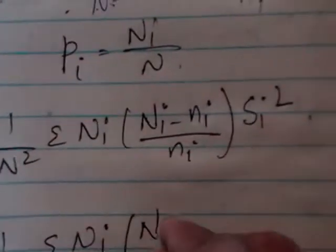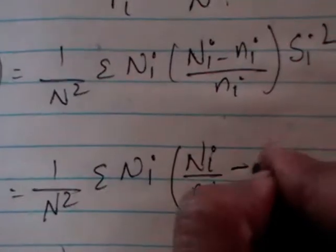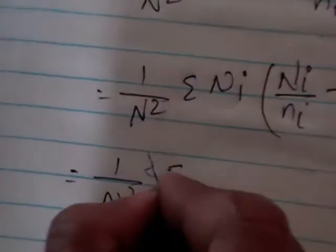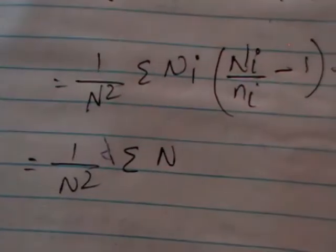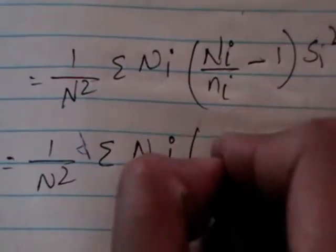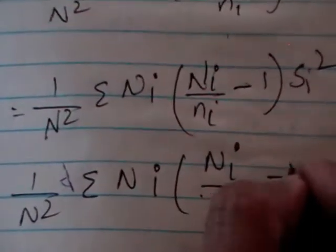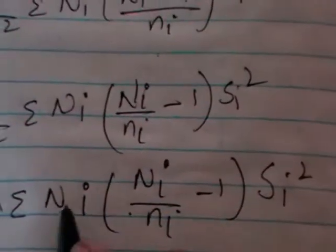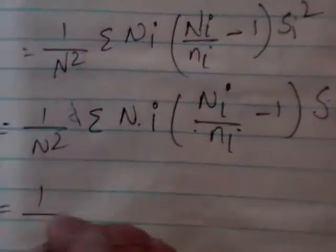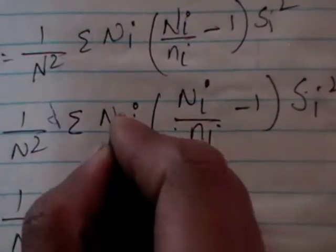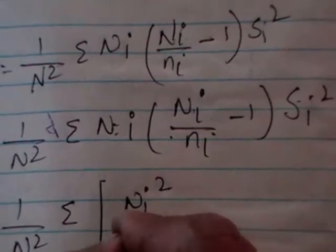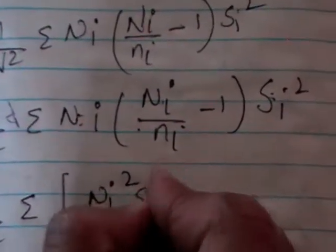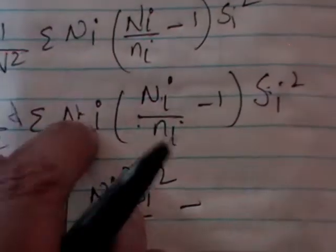We divide the two terms: Ni by Ni minus ni by Ni equals 1, multiplied by Si-square. Expanding, we get 1 by N-square times Sigma Ni into Ni into Si-square divided by Ni, giving us Ni-square Si-square by Ni, minus Ni into Si-square, which is NiSi-square.